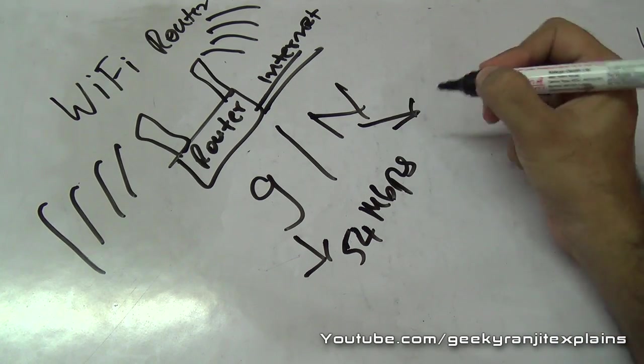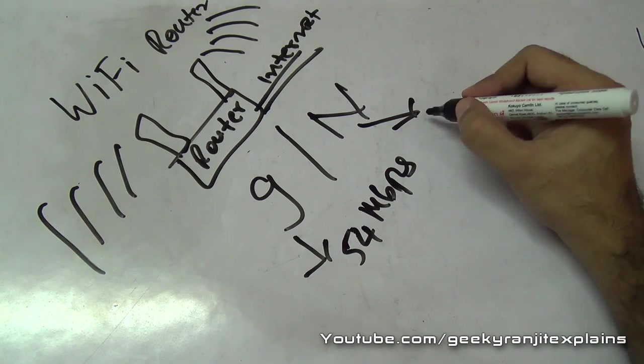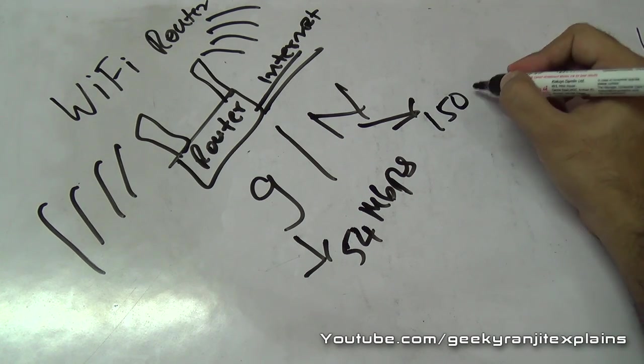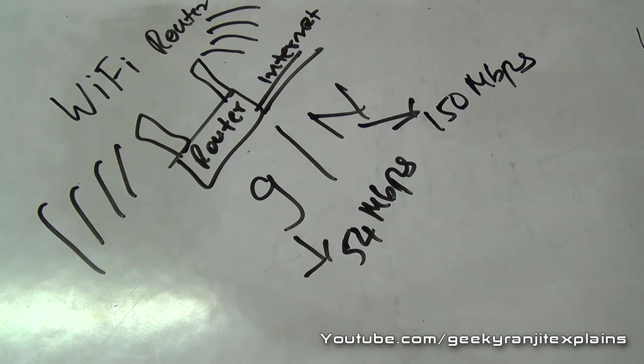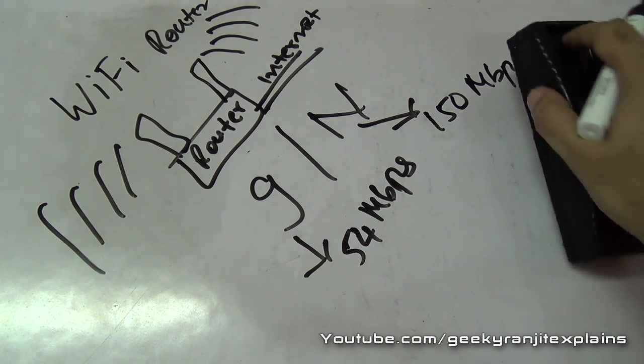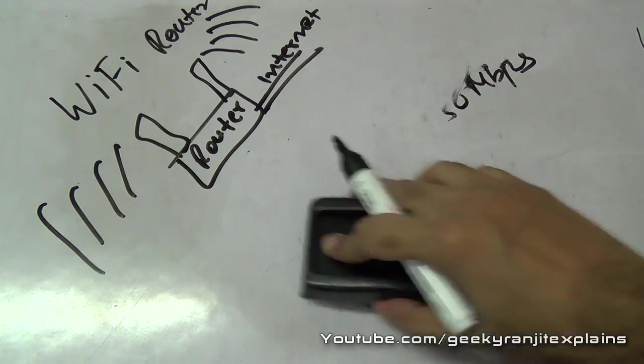G had a maximum speed of 54 megabits per second, and n had higher speeds. When n was introduced, it had speeds of 150 Mbps. Now with n there are actually multiple formats.